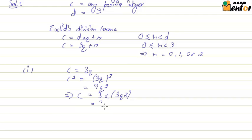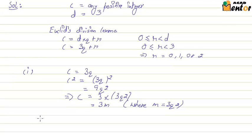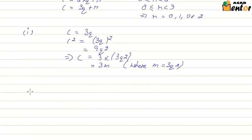Let's take the second case where r is 1. So c would be 3q plus 1. Again squaring both sides, we'll get c square equals 3q plus 1 to the whole square. Using the formula a plus b whole square, we'll get 9q square plus 6q plus 1.